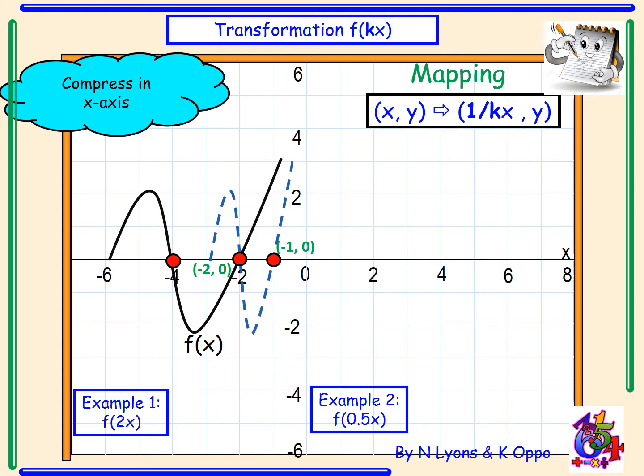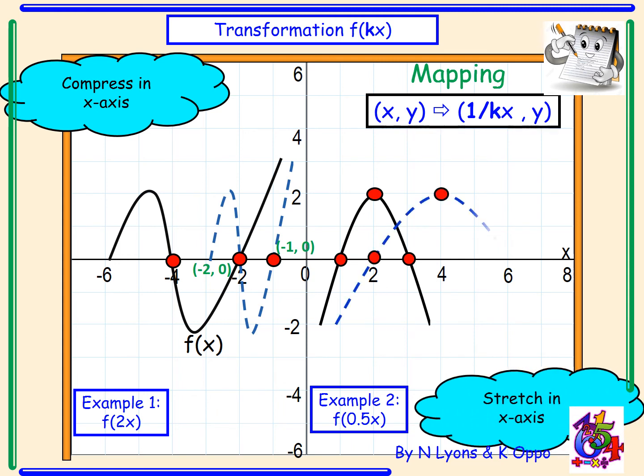Hopefully this will be clearer when we look at example 2. Here we've got a graph where we have 3 points: (1, 0), (2, 2), and (3, 0). We've defined f(0.5x), which is the same as halving. Therefore, instead of halving, we are going to stretch and double our x-coordinates.